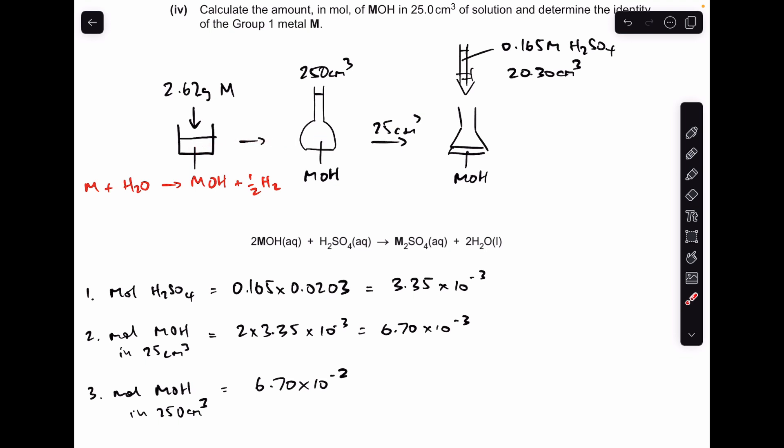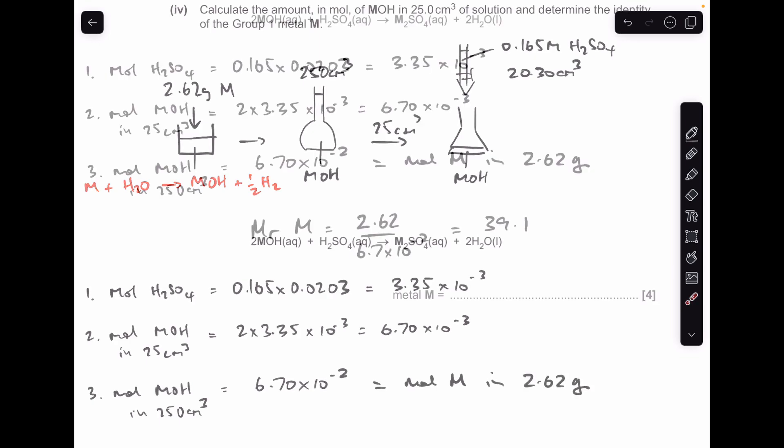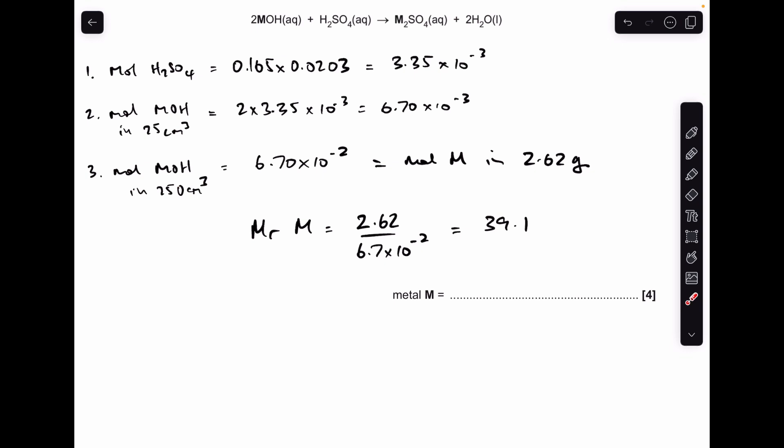But then we've got to think about where did the MOH come from—it came from this reaction here, and you can see there's a one-to-one mole ratio there. So these moles in 250 are also the moles of M in the 2.62 grams. And then the last thing we need to do is work out the MR of M. That's mass over moles: 39.1. It's in group one, and so therefore the metal is potassium.